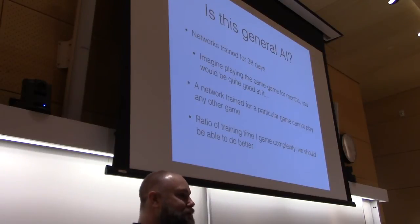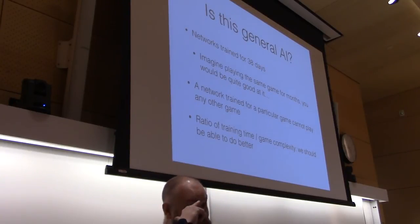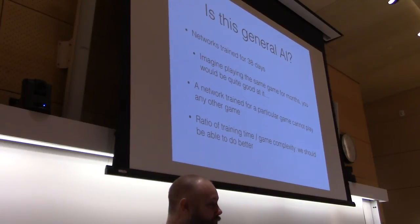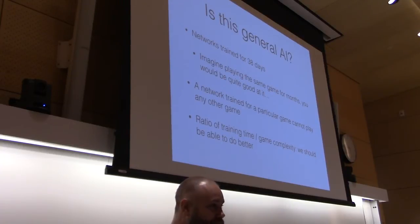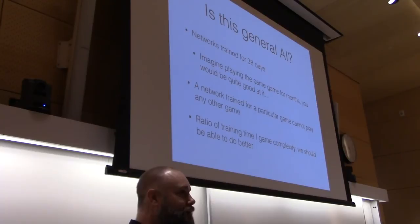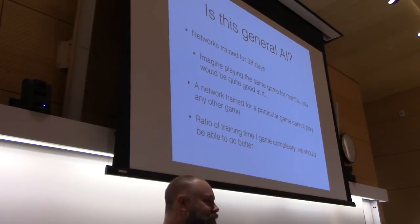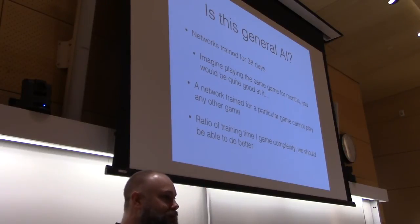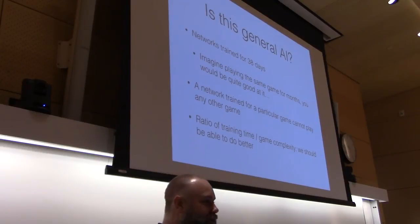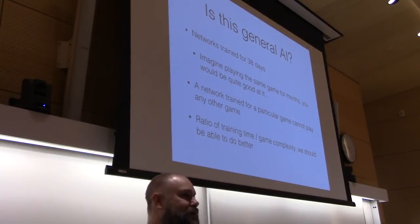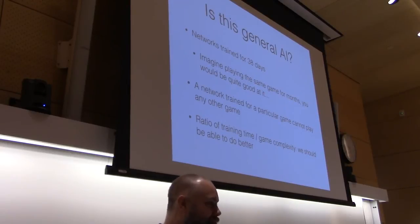Looking at how simple these Atari games are — 128 bytes of memory, no randomness, a very simple state screen representation — the paper says something about 50 million game frames per play, meaning you could almost make a lookup table of that size for such simple games. DeepMind working Atari is very impressive, but I don't think it's general AI. It's very narrow.